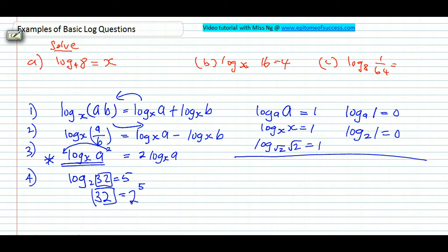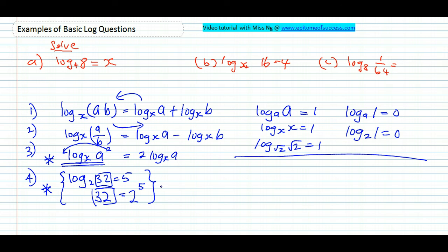If you check it with your calculator, 2 to the power of 5 equals 32. Why is this very useful? Because very often you are given a question in log and asked to solve it — you have to find some way to get rid of the log. How do you get rid of the log? By turning them into indices. So you see there is a log here, and now there is no more log — everything is in numbers. This is another crucial skill that you must have at the tips of your fingers.